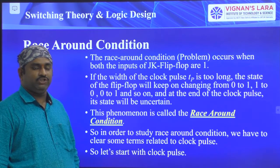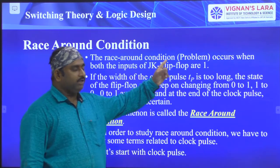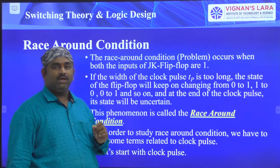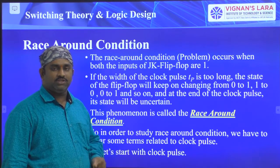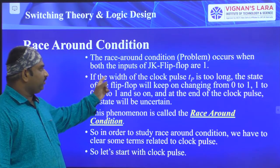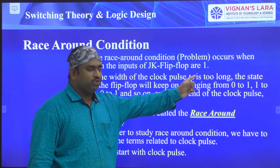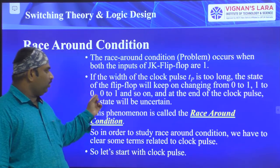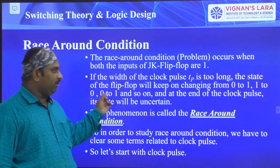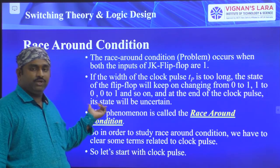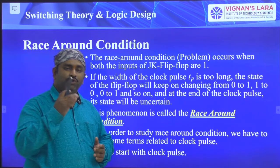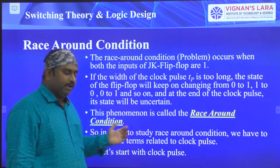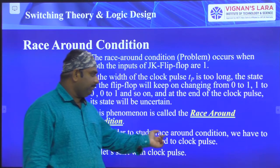Let us see what is meant by race around condition. The race around condition is a problem that occurs when both inputs of JK flip-flop are one — that is, whenever J is equal to 1 and K is equal to 1. If the width of the clock pulse is too long, the state of the flip-flop will keep changing from zero to one, one to zero, and so on. This continuous toggling is called race around condition.